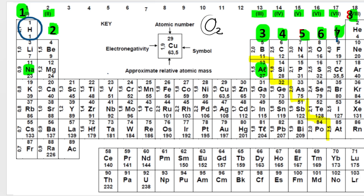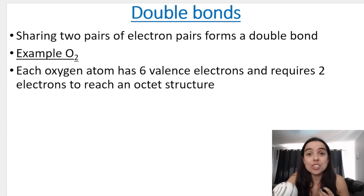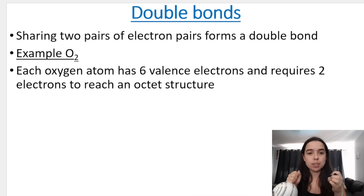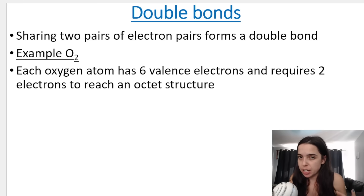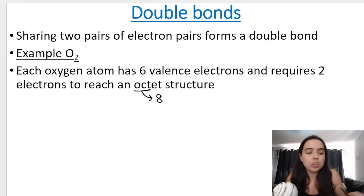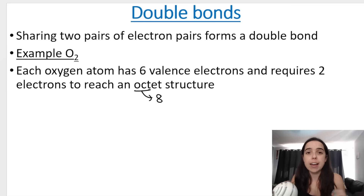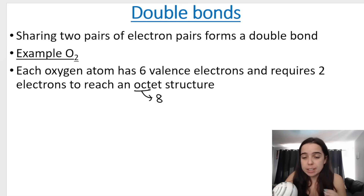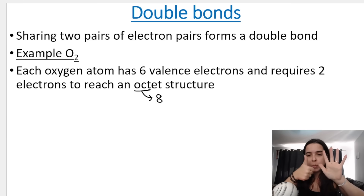I'm dealing with O2, so I need to look for oxygen. Oxygen has six valence electrons. From the previous videos, recall that each atom needs to reach what we call octet structure. Yes, there are exceptions — hydrogen cannot reach octet structure. Octet means eight, like an octopus or octagon. So most atoms need eight valence electrons to reach their stable state, their filled valence electron shells. Hydrogen only needs two; the rest need eight. So each oxygen atom has six and needs two more.